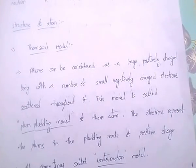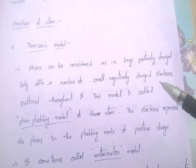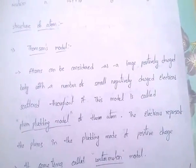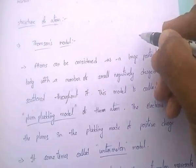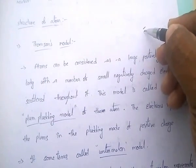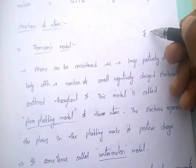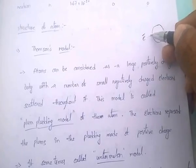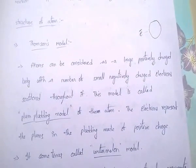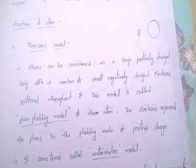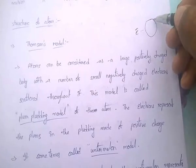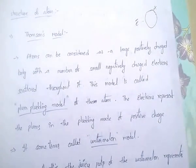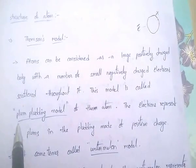Coming to the first model — Thomson's model. According to Thomson's model, atoms can be considered as a large positively charged body with a number of small negatively charged electrons scattering through it. This model is also called the plum pudding model.